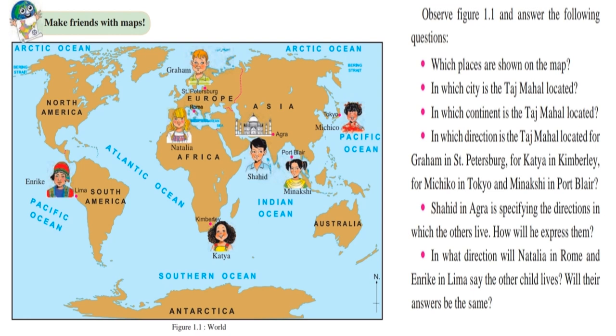Thus, geographers developed a technique called as the Graticule. A Graticule helps us to determine the precise location of any place on the earth. Let us see what it is.